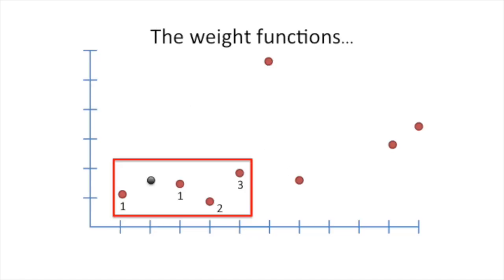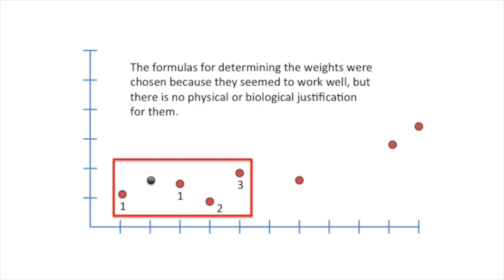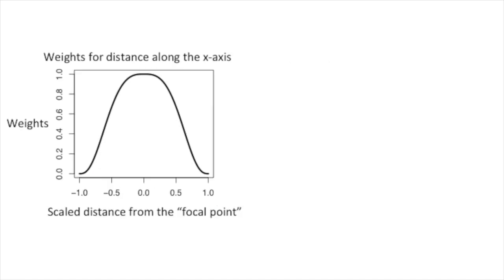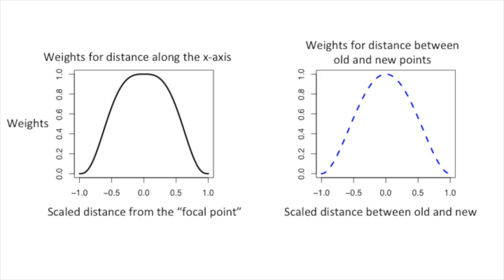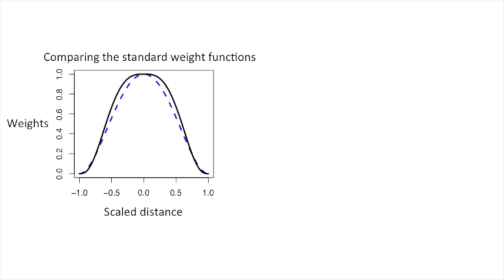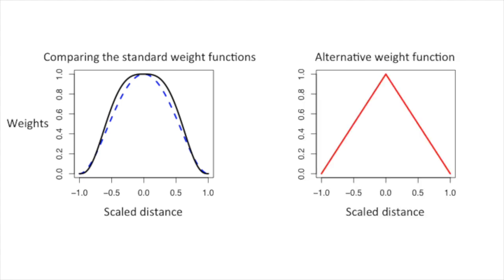Oh, let's also talk about the weight functions. The formulas for determining the weights were chosen because they seem to work well. But there's no physical or biological justification for them. Here's a graph of the weights for distance along the x-axis. Here's the graph for weights for distance between the old and new points along the y-axis. Overlapping the standard weight functions shows their subtle differences. There's no real reason we can't use an alternative weight function like this. So keep that in mind.